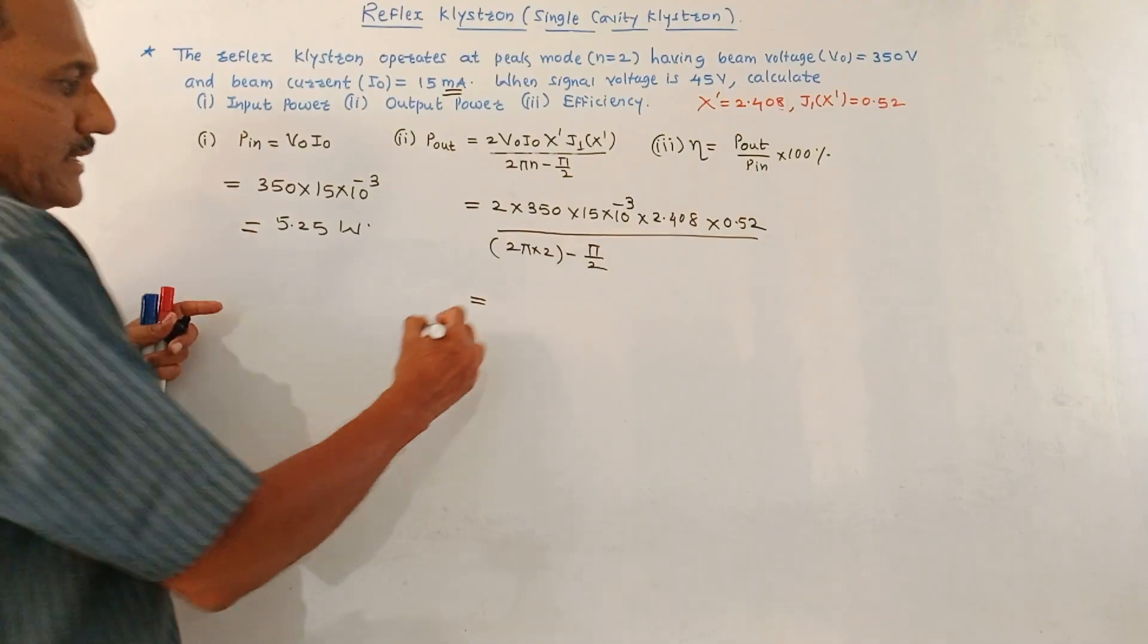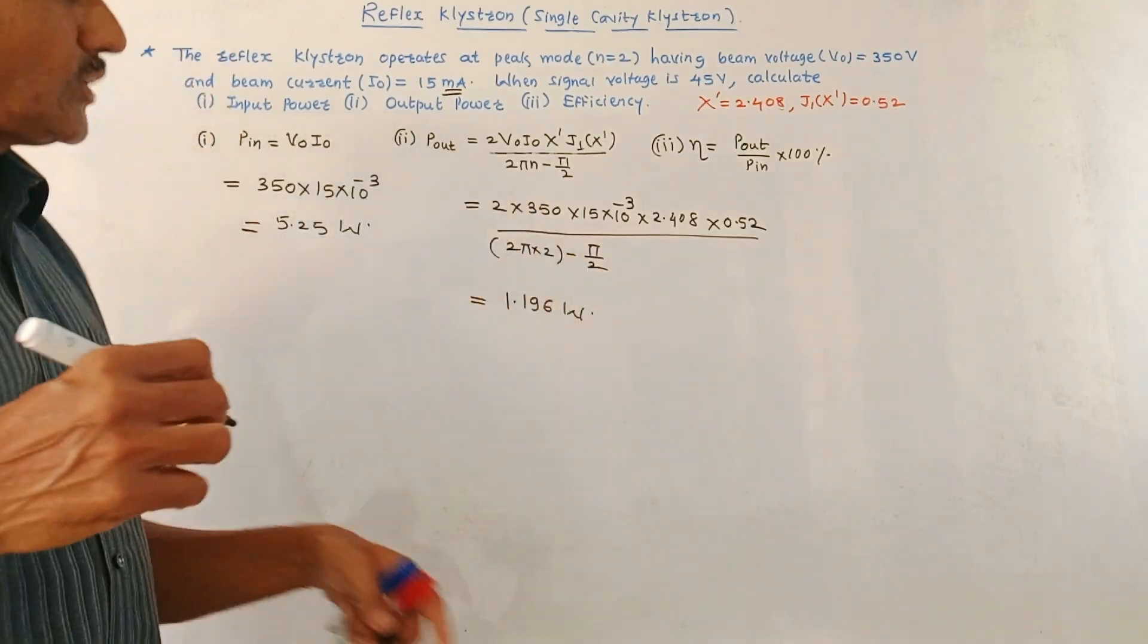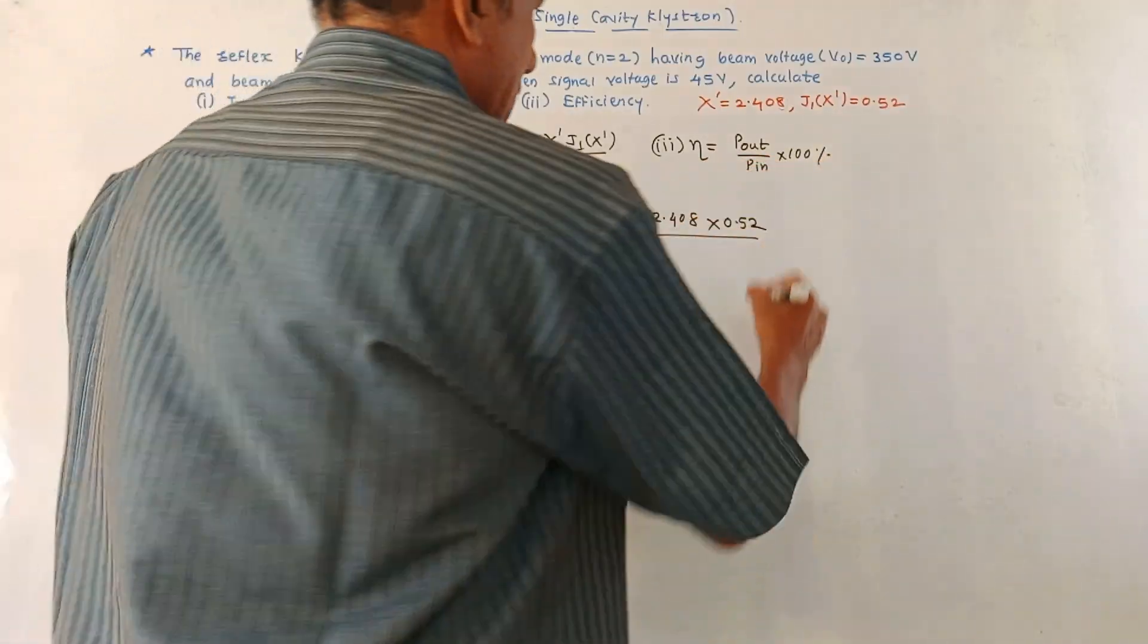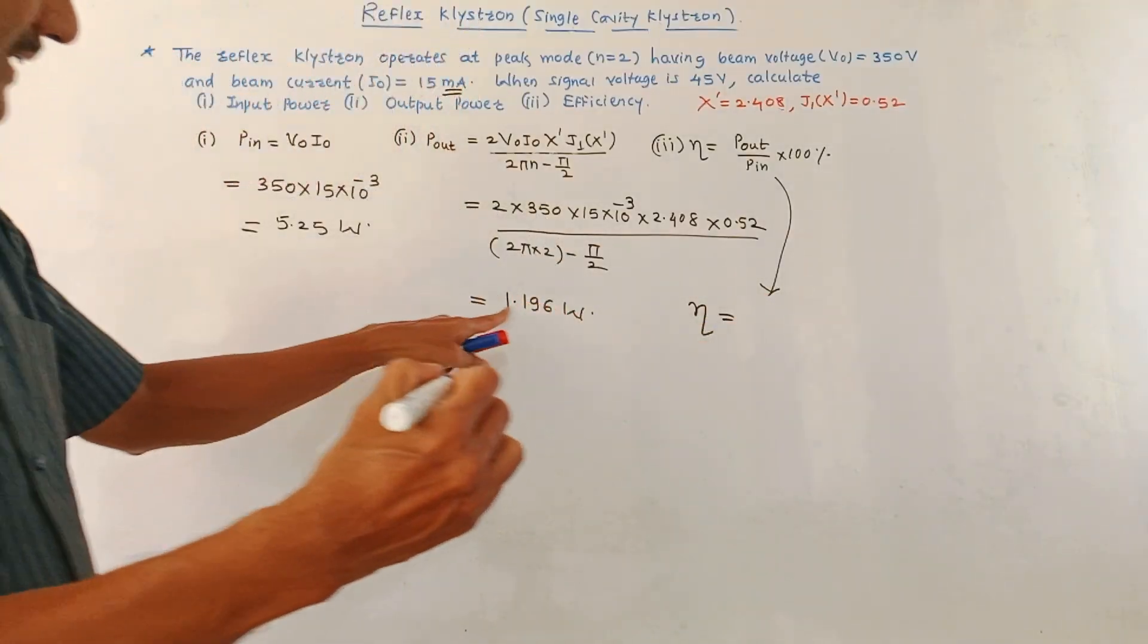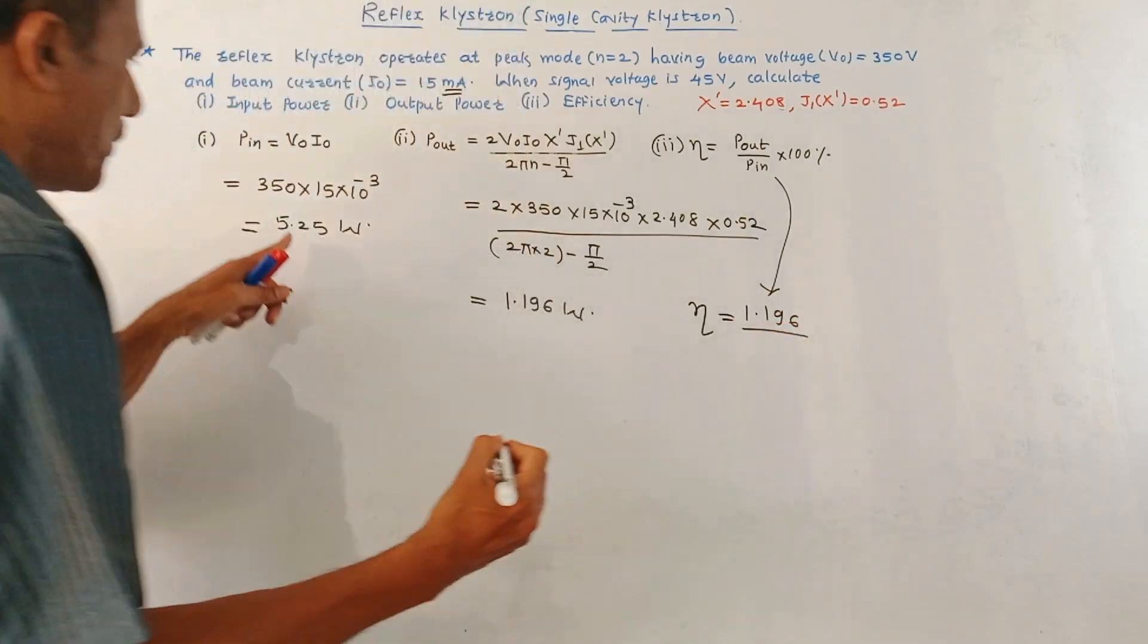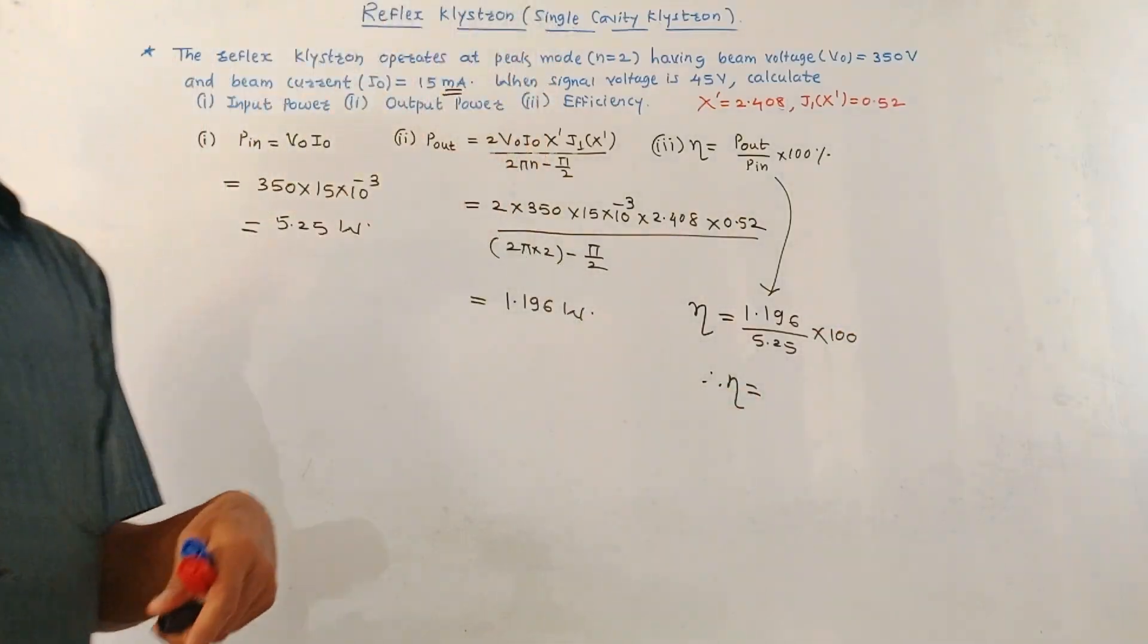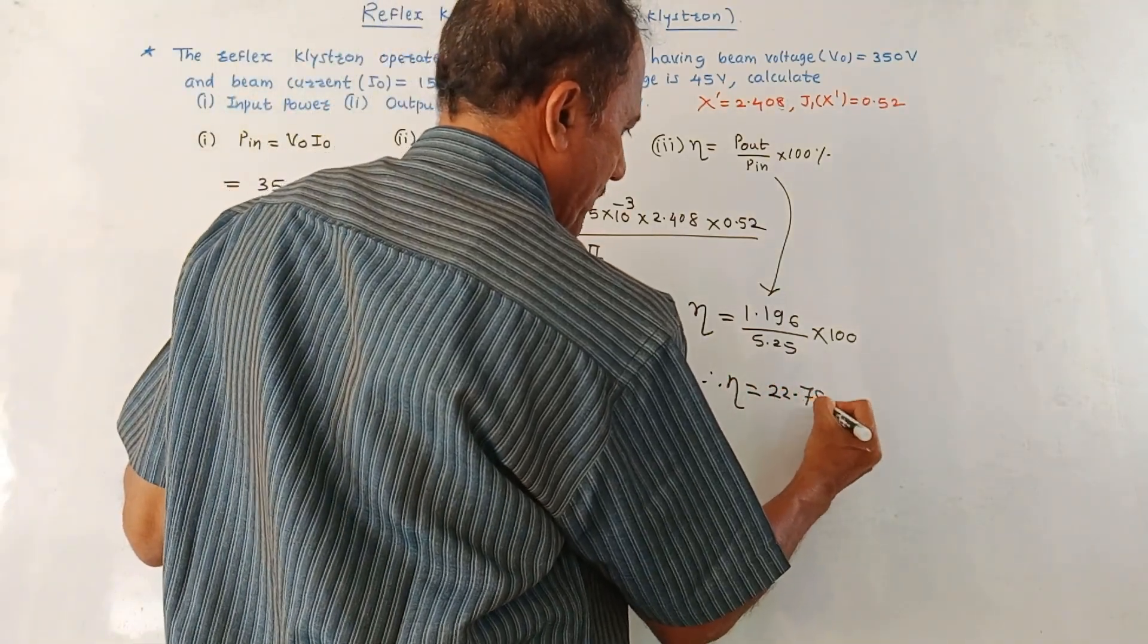Now, the third part: efficiency. It is simple ratio of output to input power and should be expressed in percentage, so multiplied by 100. This gives me efficiency eta is output power, that is 1.196 Watt upon input power that is 5.25 Watt into 100. So efficiency is equal to 22.78%.